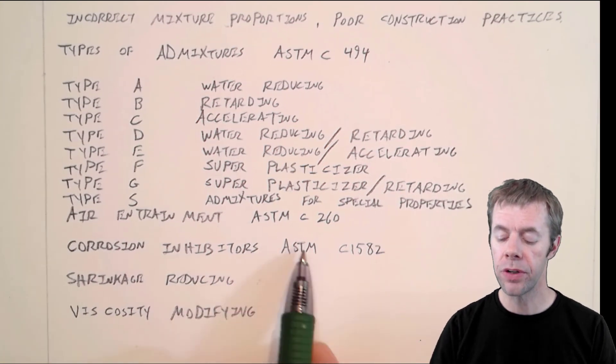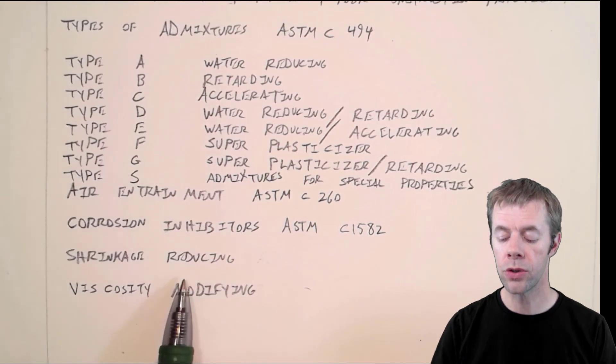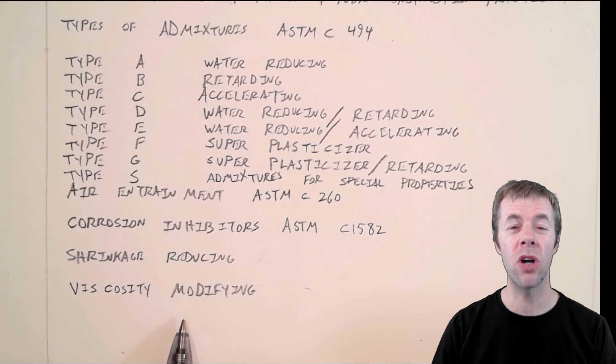These F and G are the most commonly used water reducers today, and then there's the good old type S. Air entrainment falls into ASTM C260. Corrosion inhibitors, shrinkage-reducing admixtures, and viscosity-modifying agents are all admixtures widely used in concrete.